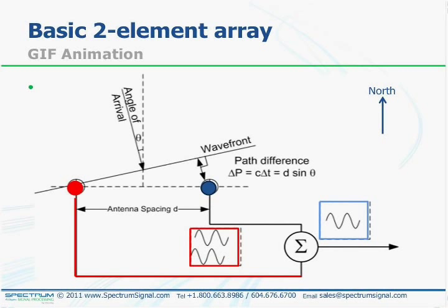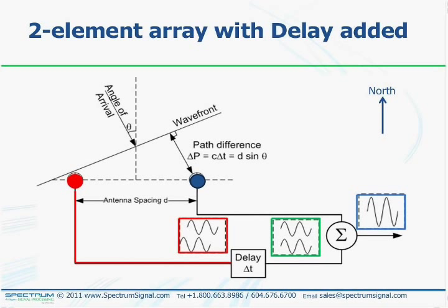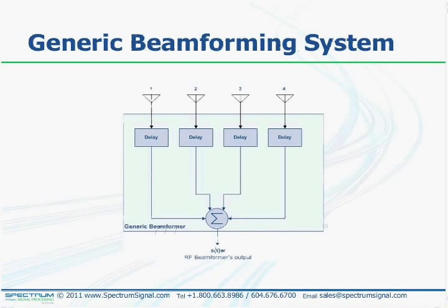Now, adding a delay line to one antenna element: with an off-axis signal arriving with the two sinusoids out of phase, applying a delay to one element brings them back into phase, so they add constructively and produce a strong signal. You have to choose the delay carefully so that the delta T, the difference in time, matches the delta T in the path difference. This generalizes to a beamformer where delays are introduced on all antenna lines to produce a strong response in a desired direction.